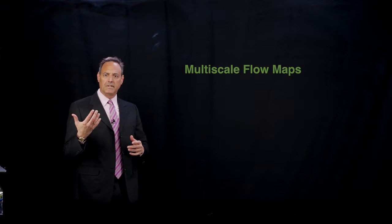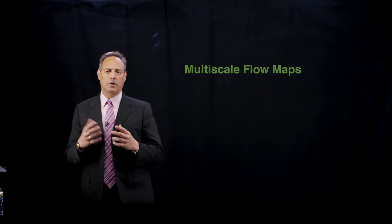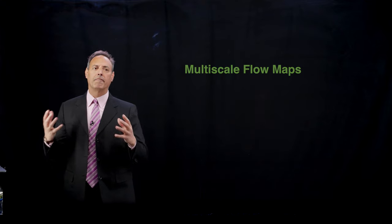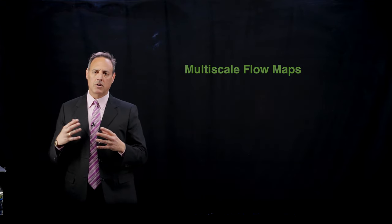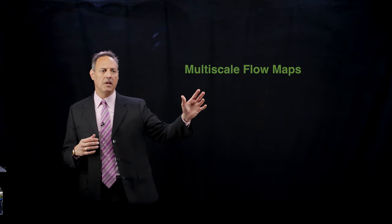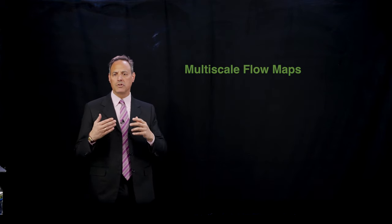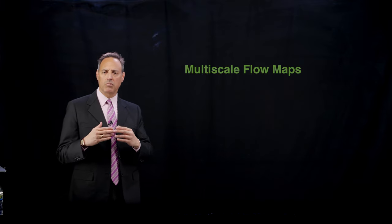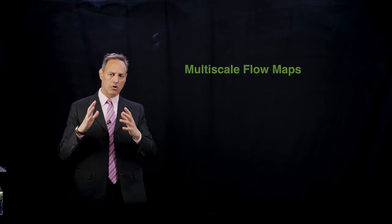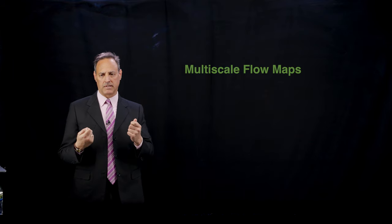Welcome back to this series on time-stepping algorithms, specifically with neural network training. We're learning flow maps, and this is going to be the final lecture on this. The focus here is going to be on thinking about multi-scale flow maps. What I've shown in the first two lectures is how to take time steps using a neural network, how to train it to map you from time t to t plus delta t.